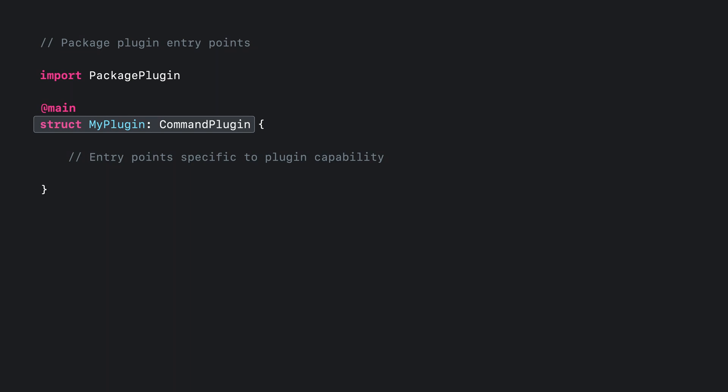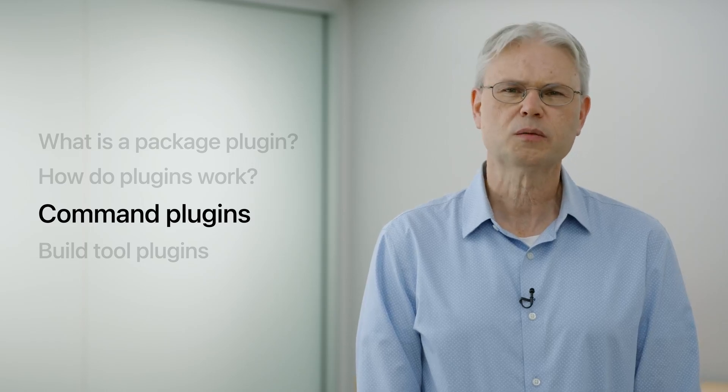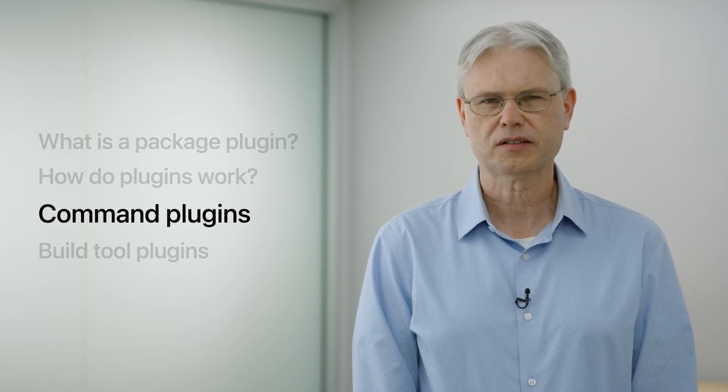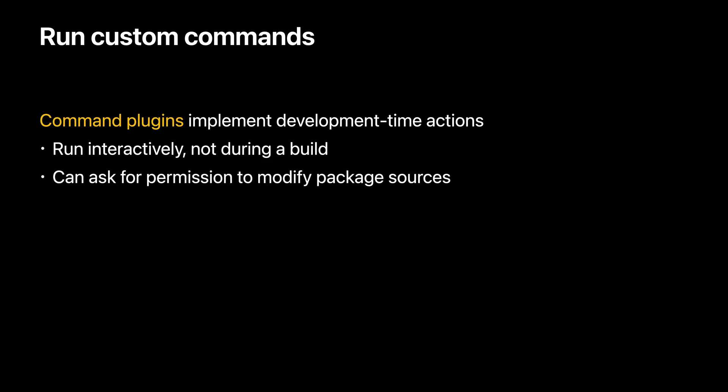You can learn more about the package plugin API in the Create Swift Package Plugins video. Earlier, we used the command plugin to make changes to our package. Command plugins extend the development workflow; they are applied directly to a package, not during a build. Not all command plugins modify the file system — there are useful actions that don't involve changing any files. But if a command does want to write to the file system, it must declare that in the manifest of the package that implements the plugin. This causes Xcode to ask the user for permission before letting the plugin run.